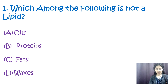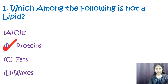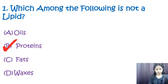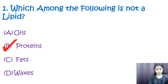Question number one: which among the following is not a lipid? Options are: a) wheat oils, b) protein, c) fats, and d) waxes. The correct option is b) protein. Lipids are a broad group of organic compounds which includes fats, waxes, oils, water-soluble vitamins, monoglycerides, diglycerides, phospholipids, and others. Protein is not a lipid.